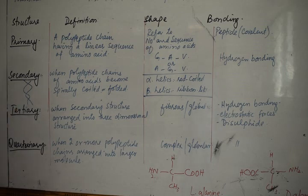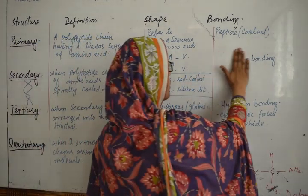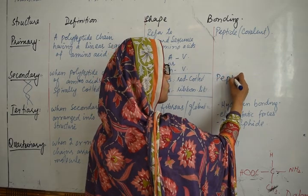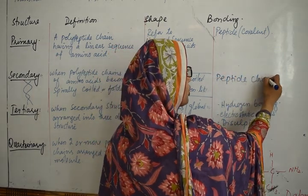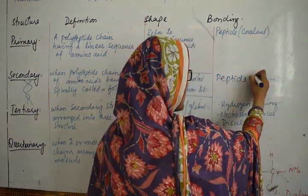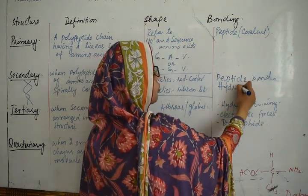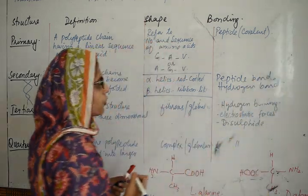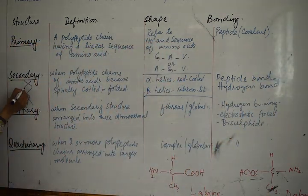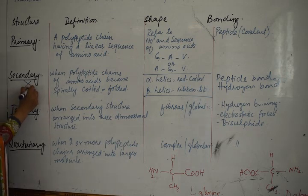If the polypeptide forms a ribbon-type structure, then it will be a beta sheet. In both alpha helix and beta sheet, peptide bonds are formed in the polypeptide chain. Along with that, hydrogen bonds are also present — the amino groups on one side and carboxylate groups on the other side of the amino acid are linked together, forming a coiled or folded structure. So in the secondary structure, the bond involved is the hydrogen bond.